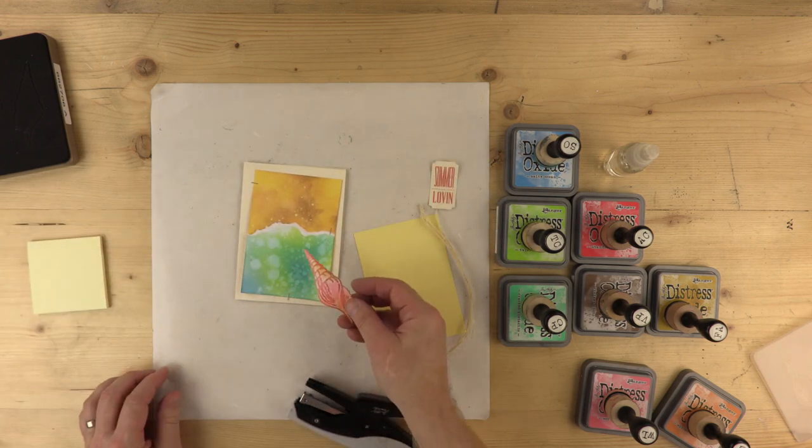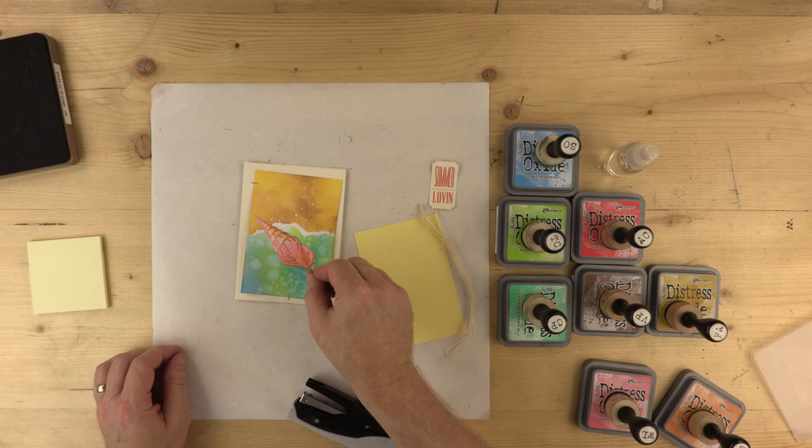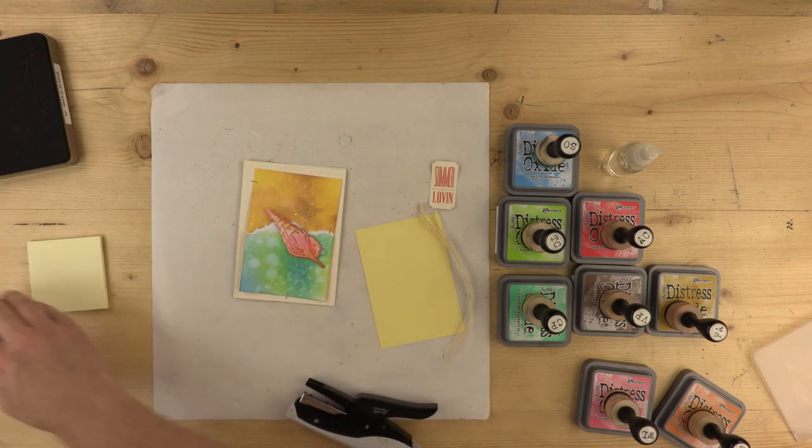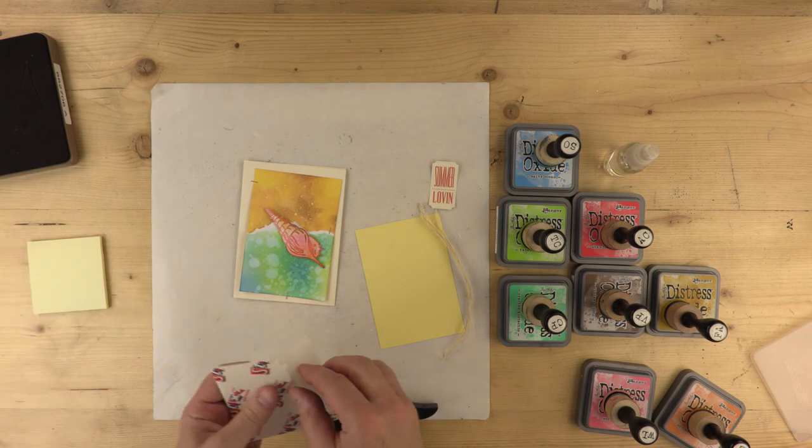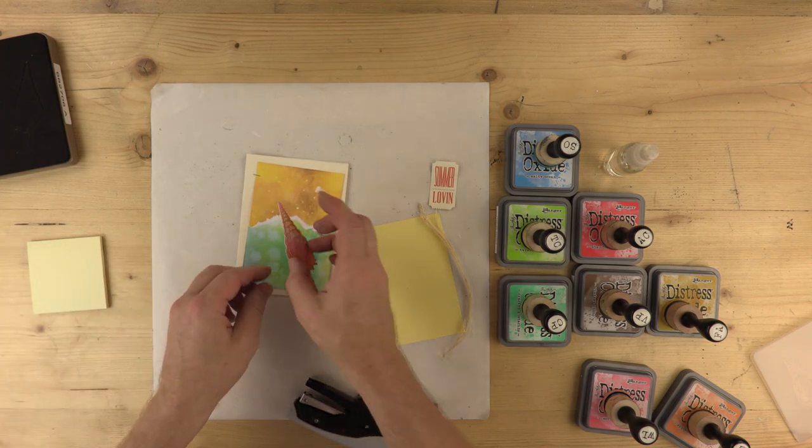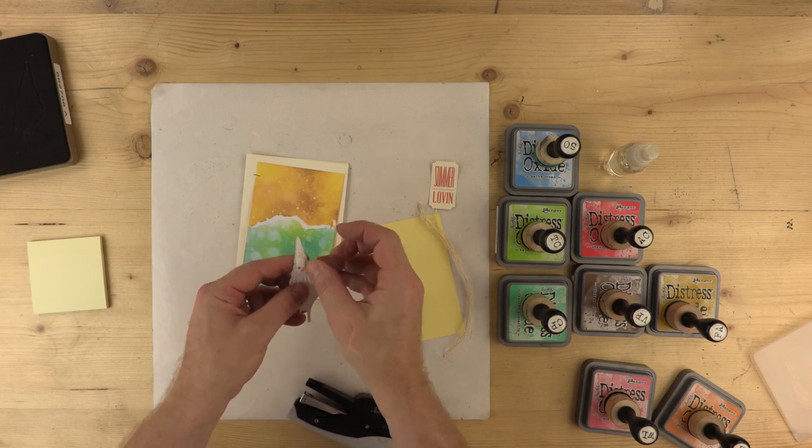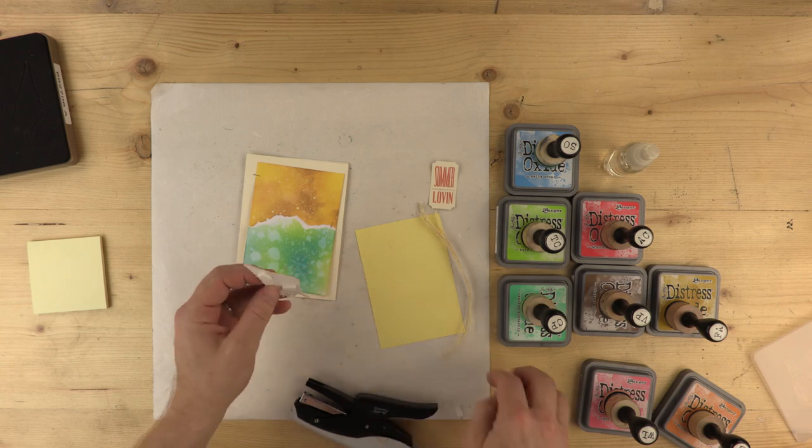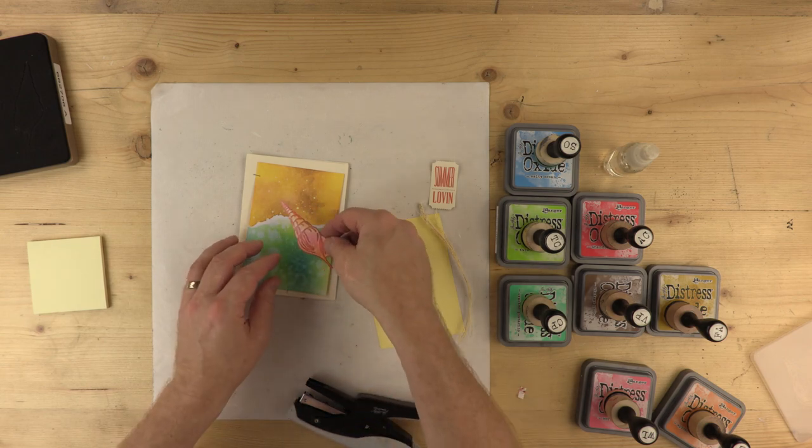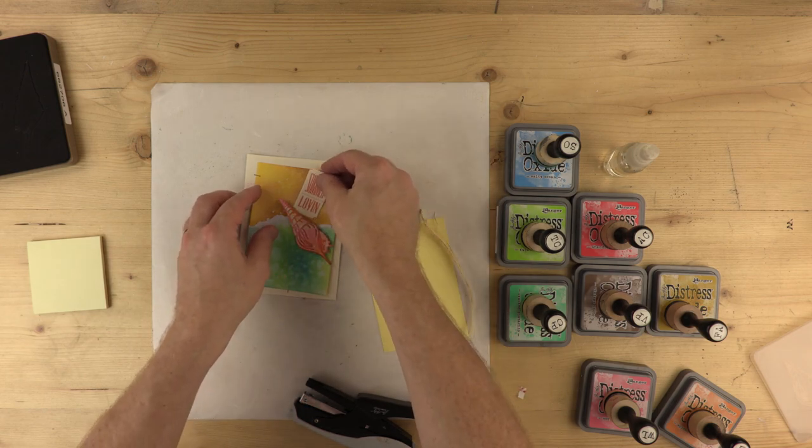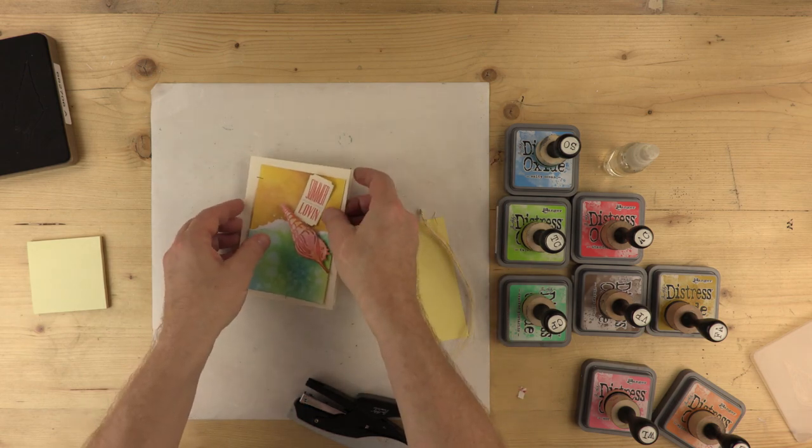The next thing I'm going to do, I want to attach my lovely seashell. Thinking kind of there. And to attach that, I'll use a couple of 3D foam pads from the good people at Styx 2. Take the backing off there. Put it in place thus. And I'm going to attach my summer loving ticket. And again, bring in the stapler.